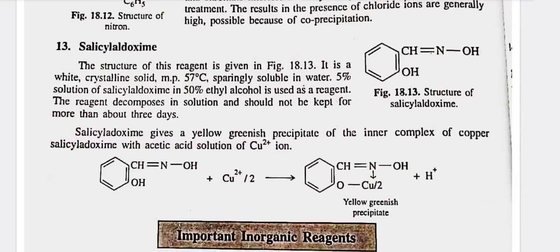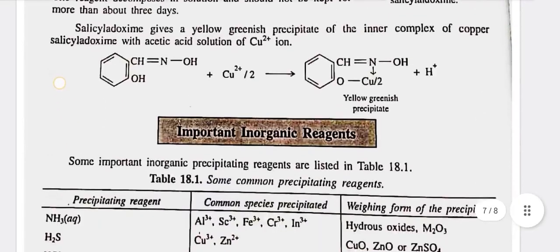Thirteenth, salicylaldoxime — the structure of this reagent is given in figure 18.13. It is a white crystalline solid, melting at 57 degrees Celsius, sparingly soluble in water. A 5% solution in 50% ethyl alcohol is used as a reagent. The reagent decomposes in solution and should not be kept for more than about 3 days. This gives a yellow-greenish precipitate of the inner complex of copper salicylaldoxime with acetic acid solution of copper-2-positive ion.